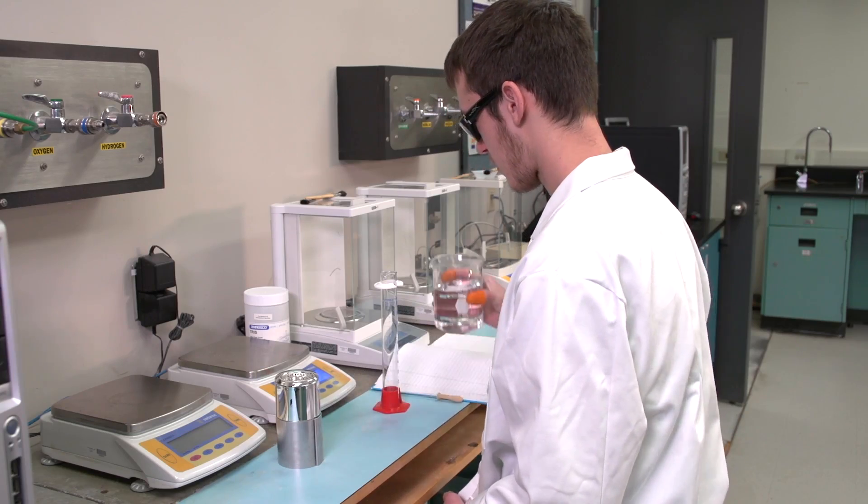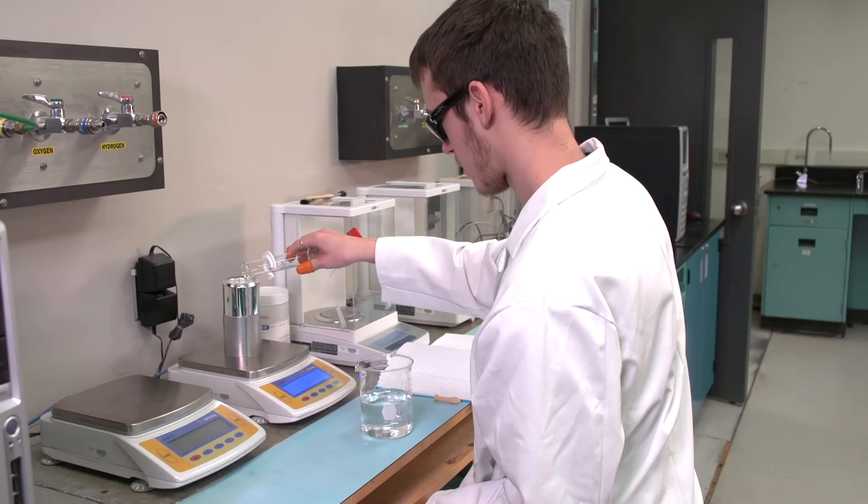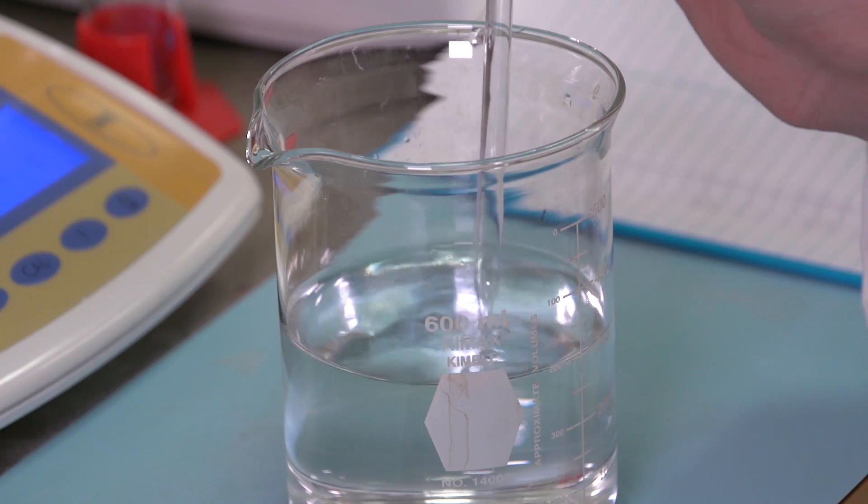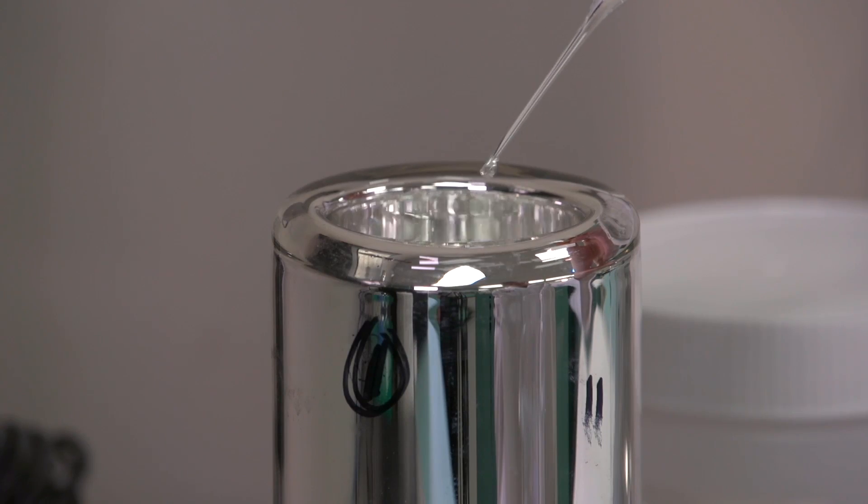Measure exactly 100 grams of solvent into the Dewar flask on the top loading balance. A Pasteur pipette is useful to adjust the final mass.